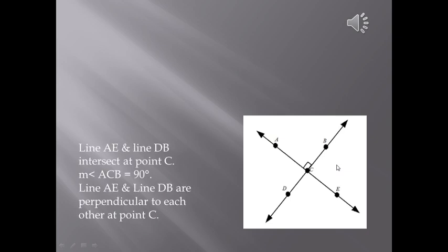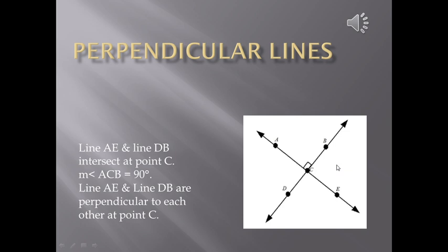Now observe this figure. In this figure also, you will find that these two lines are intersecting. But there is some difference between these intersecting lines and the lines which were shown in the previous figure. In this figure, we have got line AE and line DB intersecting each other at point C. But if you carefully observe, you will find that the angle formed between these two lines is 90 degrees.